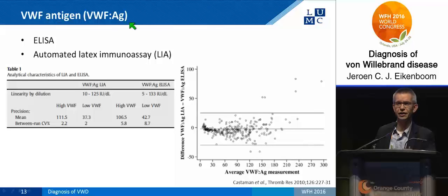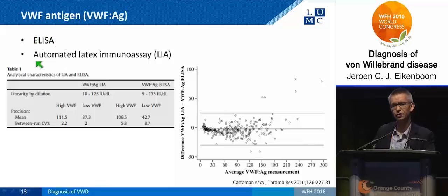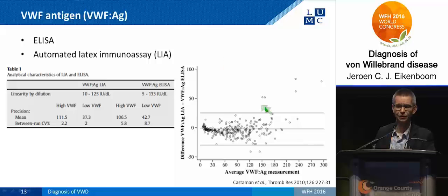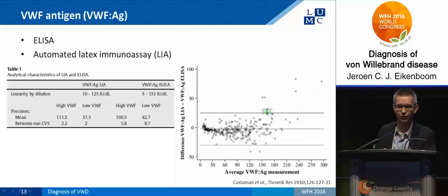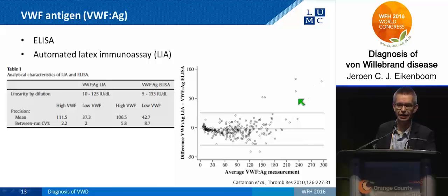First, the antigen test. There are several tests — often measured by an ELISA, which is somewhat laborious. Later, automated latex immunoassays (LIA) have been developed. In a European study, we compared these tests in a large cohort of fulvirate disease patients and found they correlate very well. Only at high fulvirate factor levels above 150%, the LIA test shows some overestimation, but in general there is good correlation.